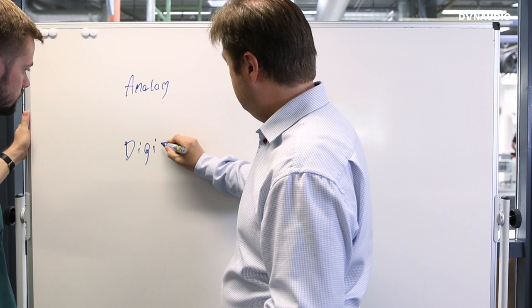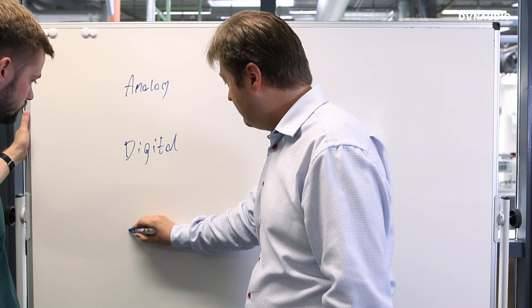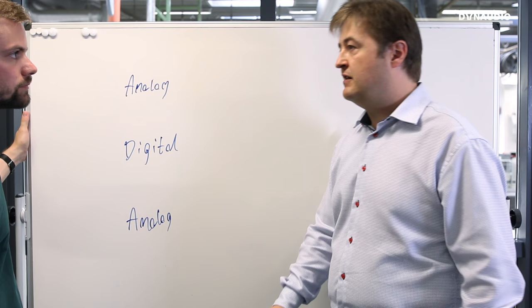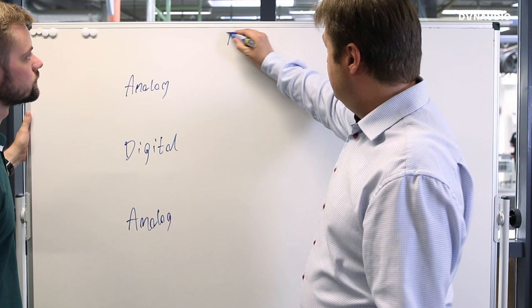And it all usually starts in analog. Then we make it digital to do the DSP and digital domain. And then usually we go back to analog, to the power amplifier, to the drive unit.